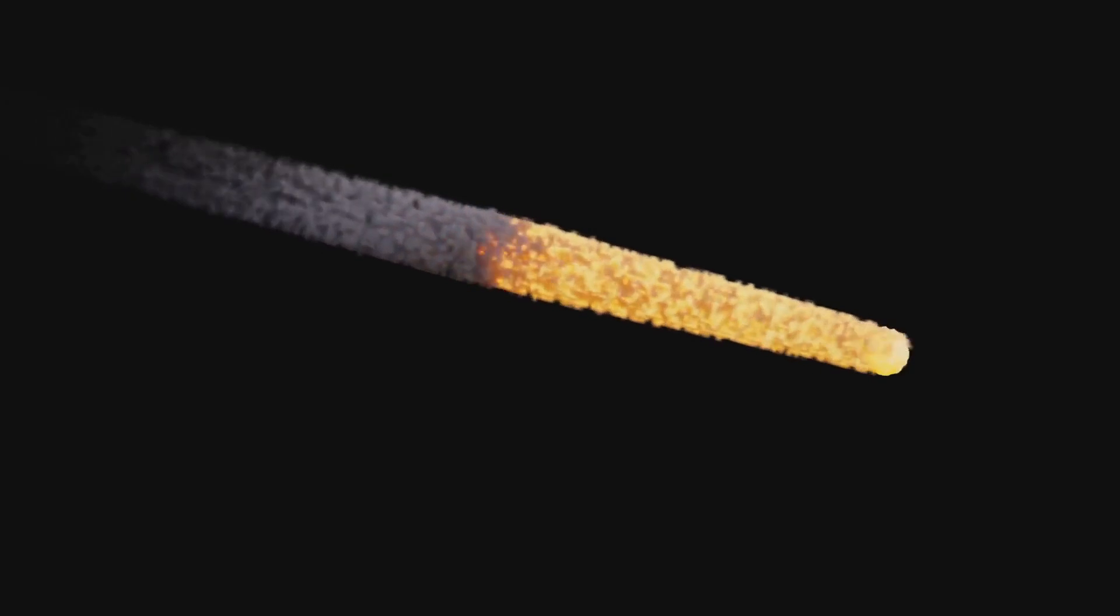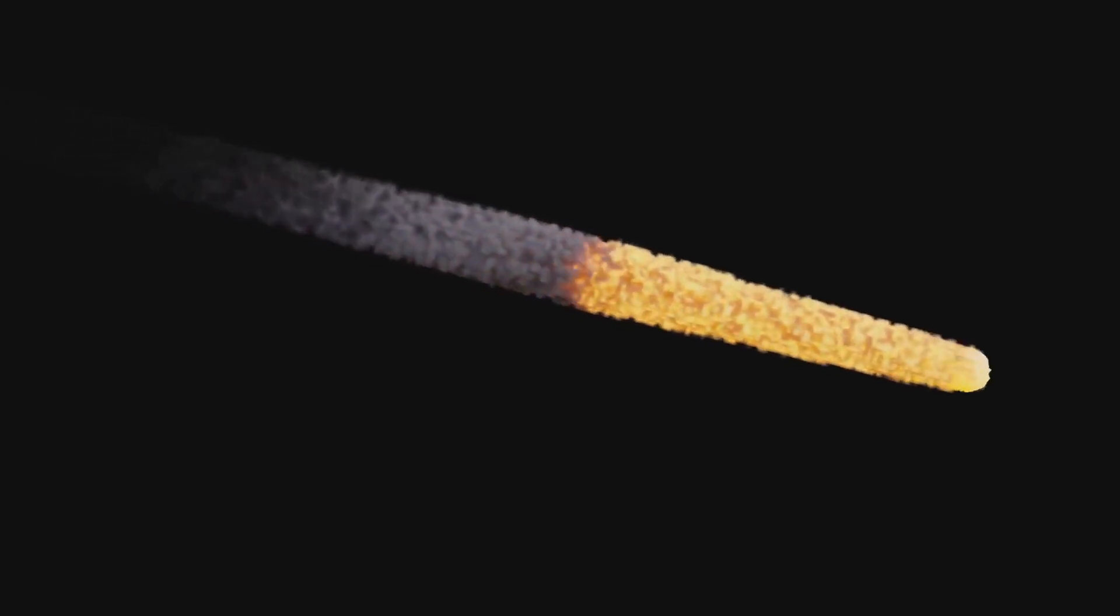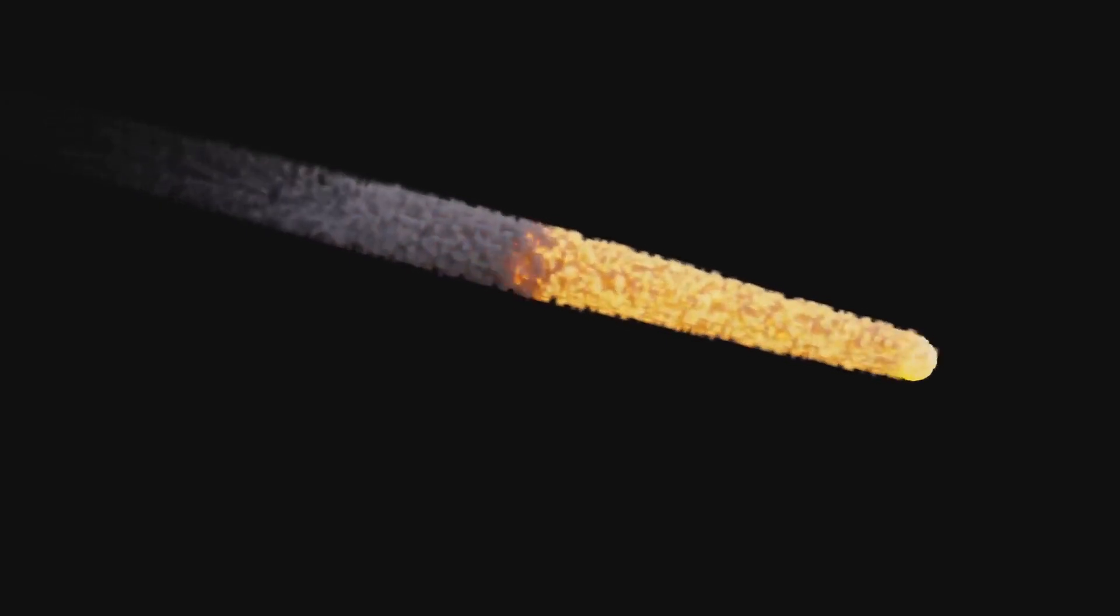But perhaps the most intriguing aspect of Oumuamua was its trajectory. It didn't follow the expected path of a comet or asteroid gravitationally bound to the sun. Instead, it slingshotted through our solar system at an unusually high speed, suggesting it originated from interstellar space.